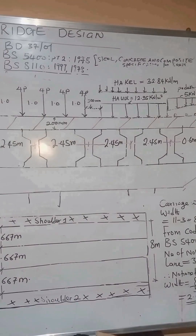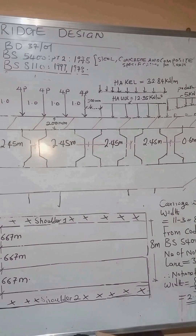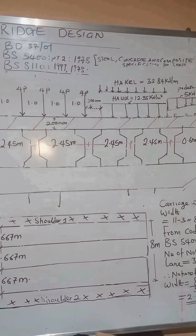We are determining the moment of inertia of the composite I-section, and from there we can begin to solve other problems. Let's go over to the determination of the sectional properties of this I-section, picking the penultimate beam. We are going to have the section as shown.